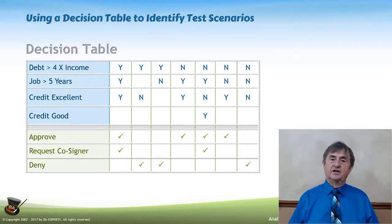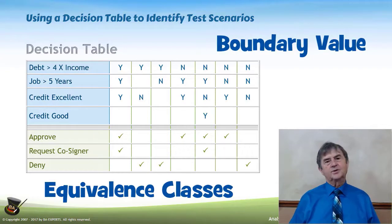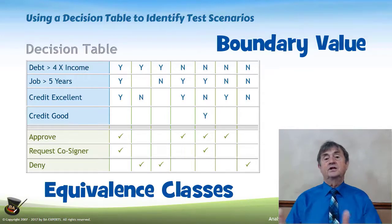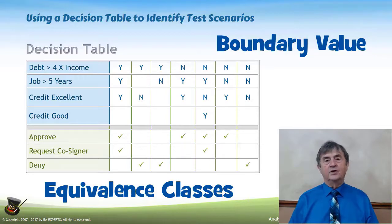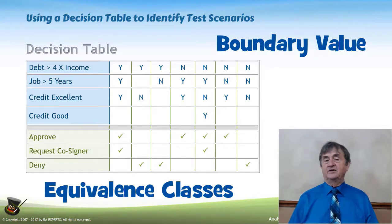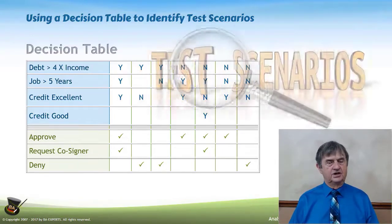To absolutely prove the application is working correctly, I have to get into boundary values and equivalence classes. For that four-times-gross-income threshold, I'm going to take a value that is one less than four times gross income, exactly four times gross income, and one more than four times gross income — that's boundary value testing. There's going to be a test scenario outline for each of these columns, which will then reference example tables that contain multiple test cases with specific data values. That's really how you get from a decision table down to test scenarios.